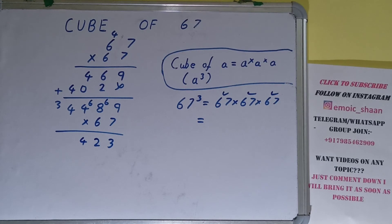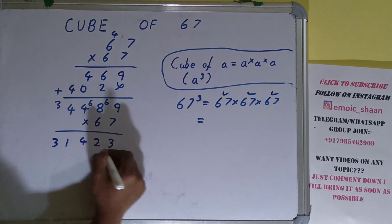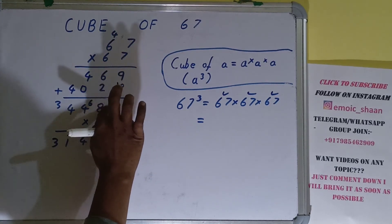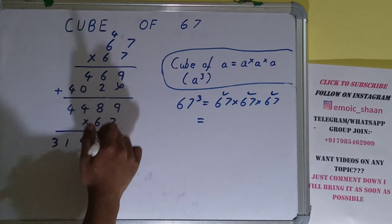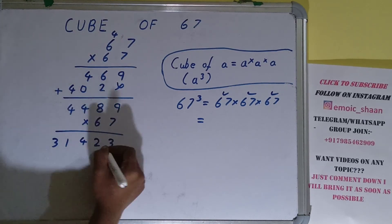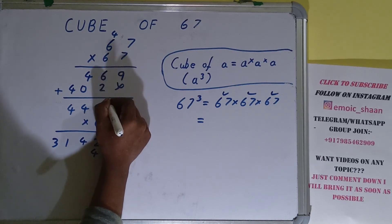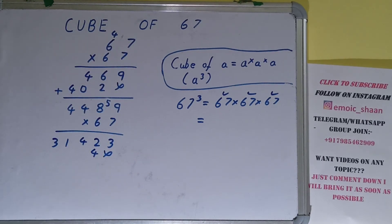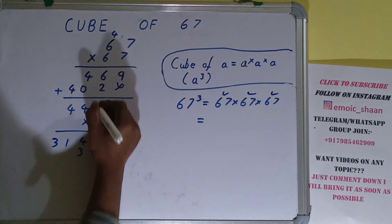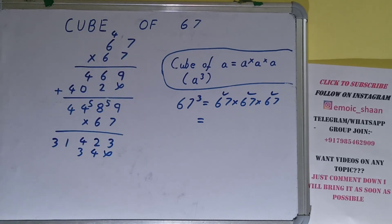7 × 4 is 28 plus 3 is 31. Now we need to multiply by 6: 6 × 9 is 54, 5 carry. 6 × 8 is 48 plus 5 is 53, 5 carry. 6 × 4 is 24